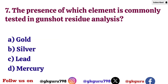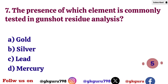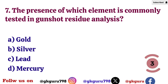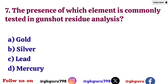Seventh question: The presence of which element is commonly tested in gunshot residue analysis? Option A: Gold. Option B: Silver. Option C: Lead. Option D: Mercury. Correct answer: Option C — Lead.